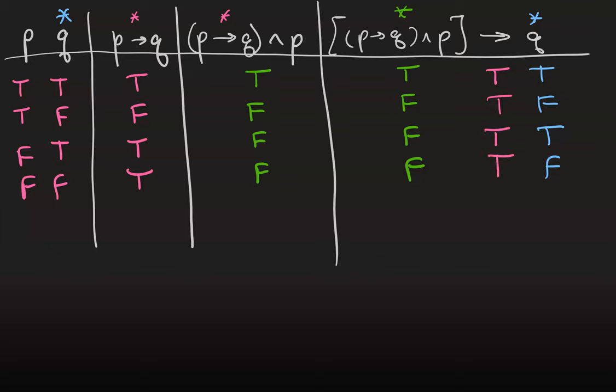So since our main connective has only trues in its truth table, this is a tautology, and therefore modus ponens is a rule of inference.